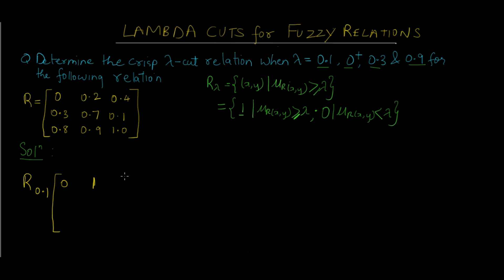Now we check the next value. 0.4 is greater than 0.1, so we replace 0.4 with 1. Similarly 0.3 is greater than 0.1, so replace that position with 1. 0.7 is greater than 0.1, replace it with 1. Now 0.1 is not greater than 0.1, but it is equal to it, and since the condition is greater than or equal to, we replace it with 1. All the remaining 3 values are greater than or equal to 0.1, so replacing all these values. There you go with the first part. We just calculated the relation with lambda value of 0.1.